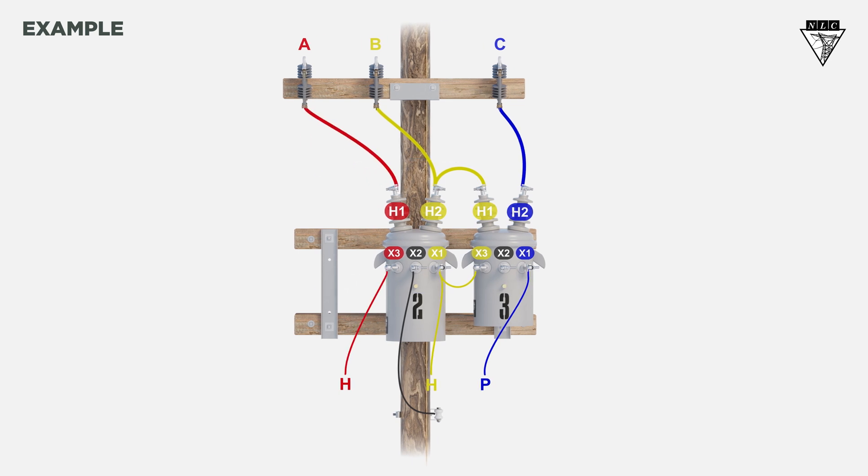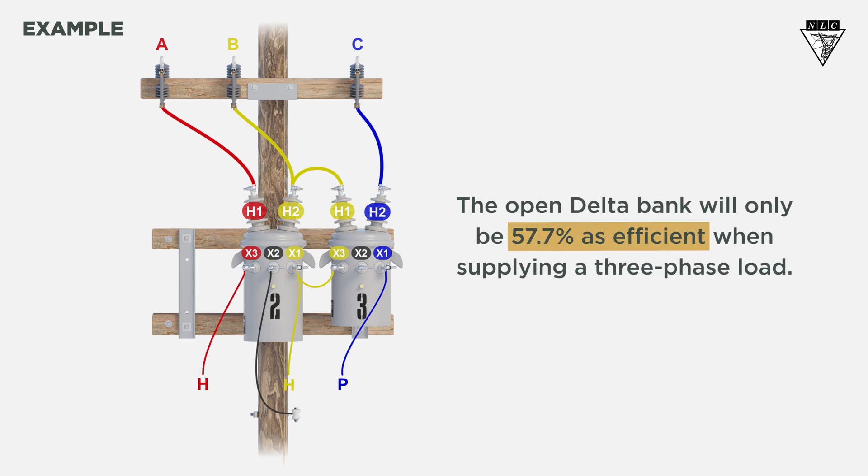However, the open delta bank will only be 57.7% as efficient when supplying a three-phase load, so it's best used temporarily.